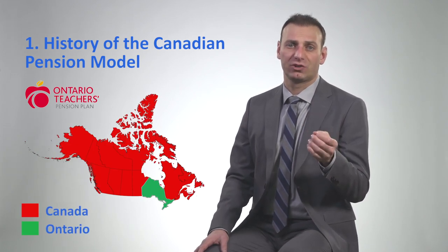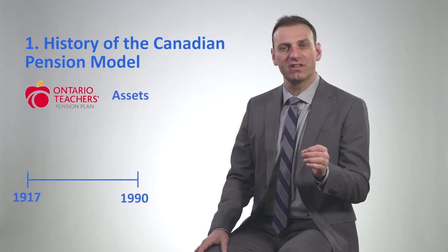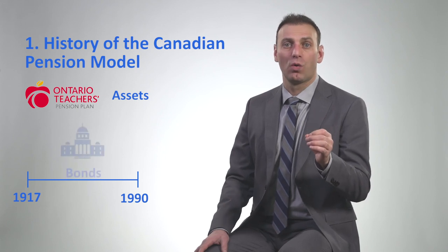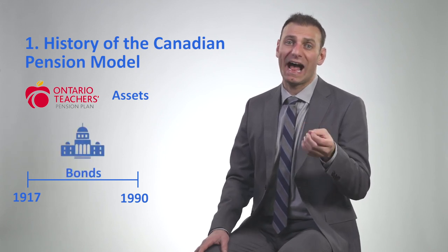Now that you understand what a pension is, let's talk about how the Ontario Teachers' Pension Plan started the Canadian pension model. The Ontario Teachers' Pension Plan is a pension plan for teachers in the province of Ontario in the country of Canada. Between 1917 and 1990, the assets for the pension plan were invested in government bonds. As such, the return from the pension assets were not sufficient to pay current and future retirees.